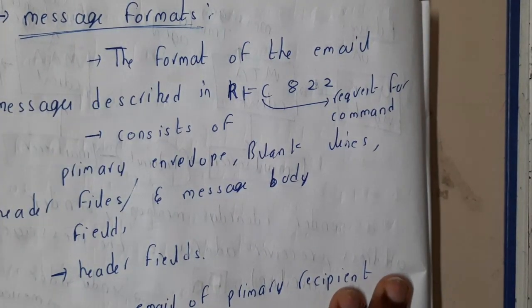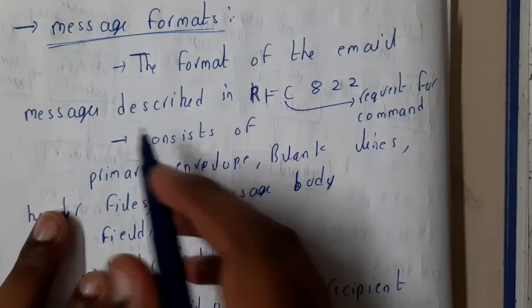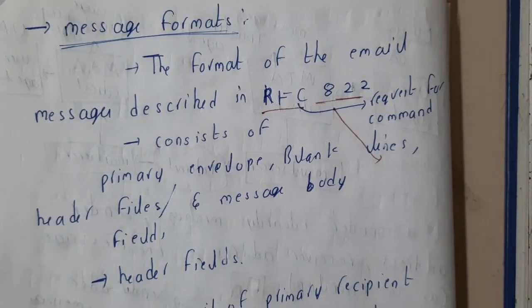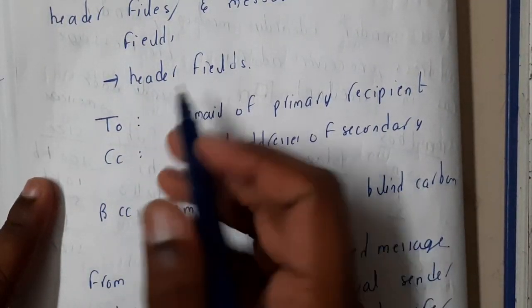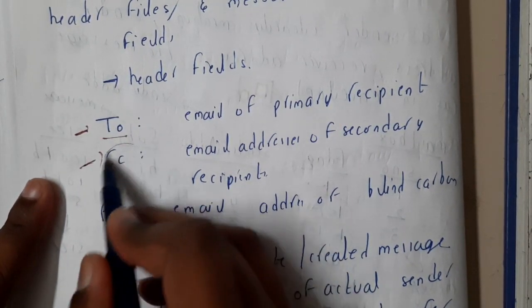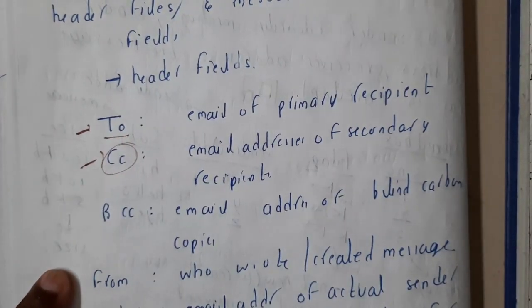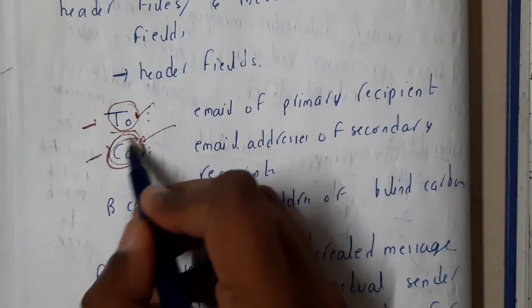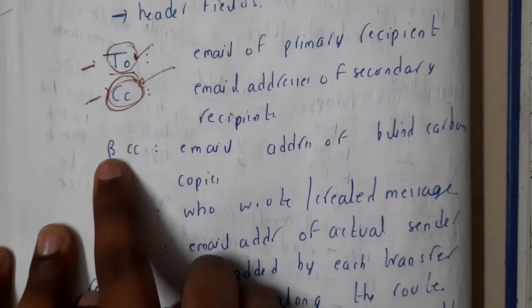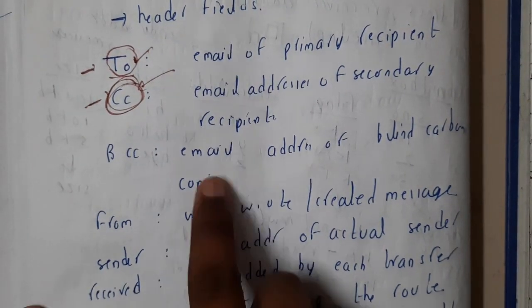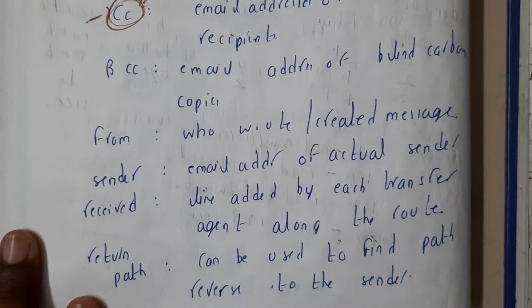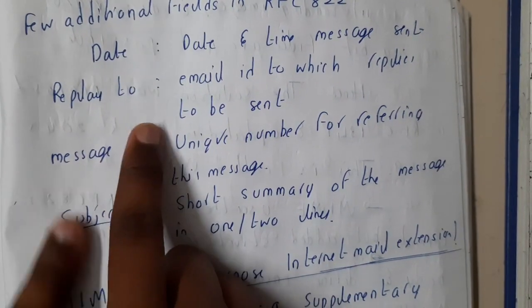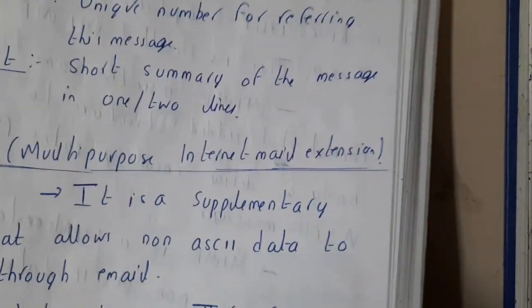Now let us go through the message format. The format described here is RFC 822, though we are currently using a completely different standard which we'll discuss in future lectures. RFC 822 consists of multiple header fields and a body. The headers include: 'To' — whom you are sending; 'CC' or carbon copy — secondary recipients; 'BCC' or blind carbon copy — recipients who get a hidden copy; 'From' — the sender's email ID; 'Return-Path' — where replies should go; 'Reply-To', 'Date', 'Message-ID', and 'Subject'.